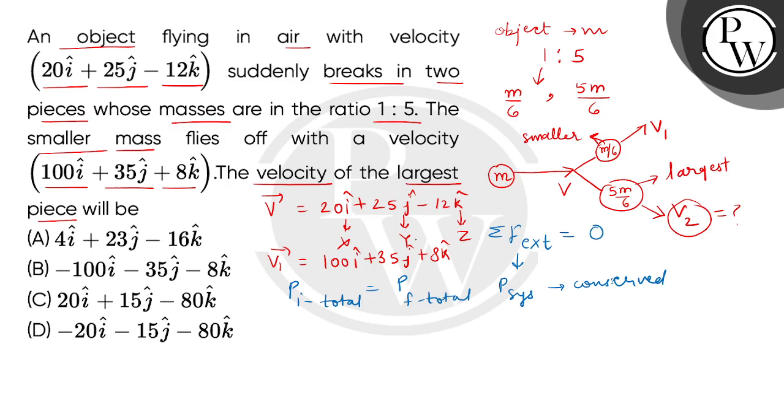We get the first mass, that momentum is mv. Second, this fragment, that momentum is m by 6 multiplied by v1. And the second mass, we will write 5m by 6 multiplied by v2. Here we will cancel m from both sides and we will get v equals to v1 divided by 6 plus 5v2 divided by 6.